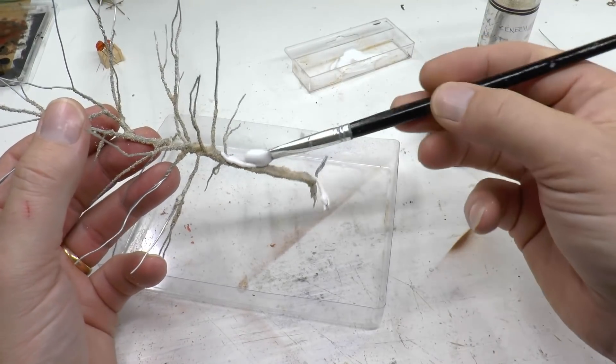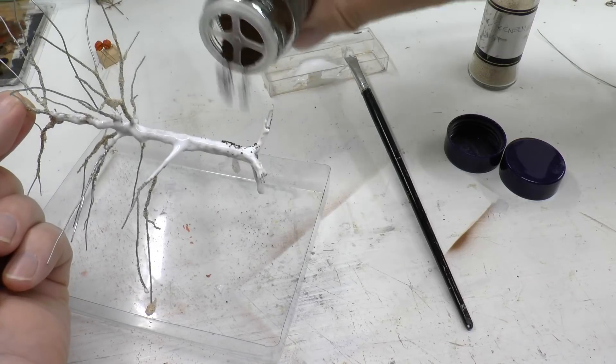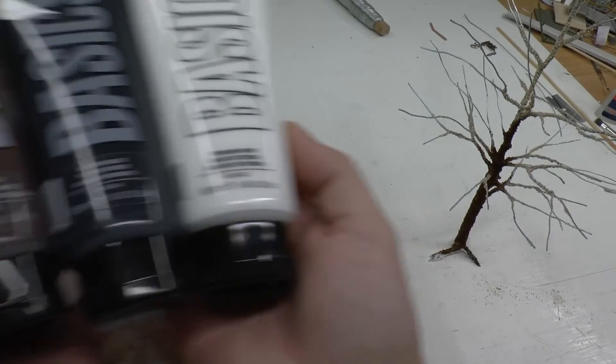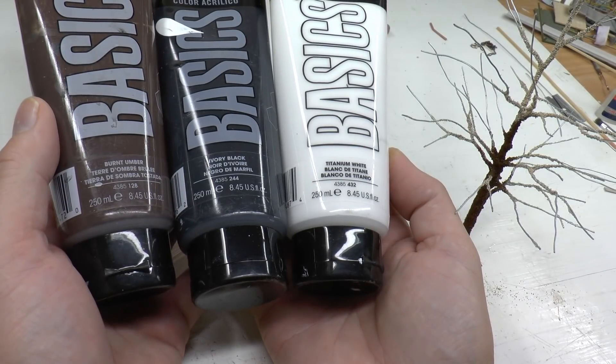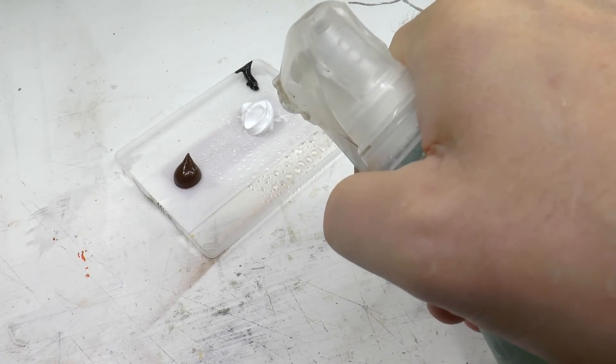Then I do another coverage of PVA glue on the lower part of the trunk and then I cover that part using coffee grounds. That is to get a more coarse texture on that part. Now time for some painting.